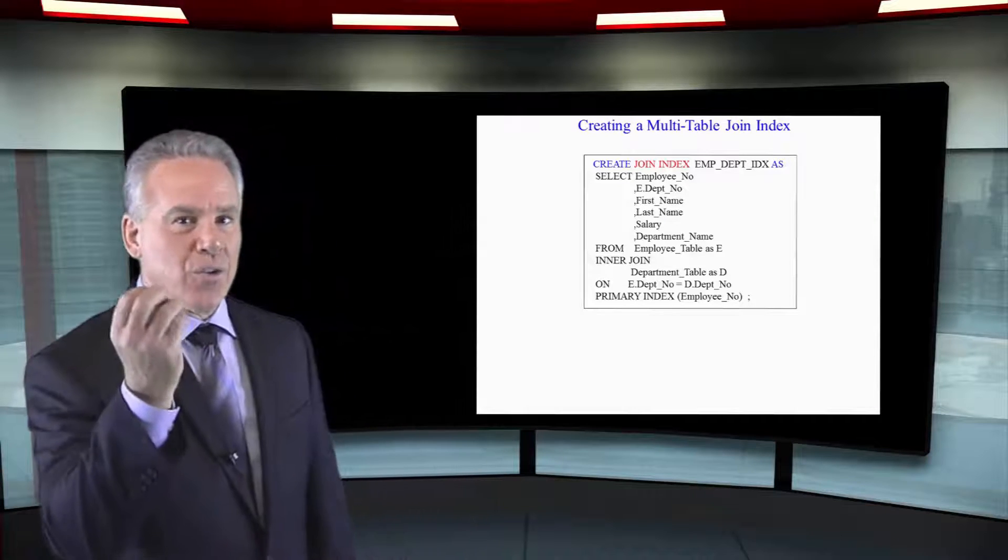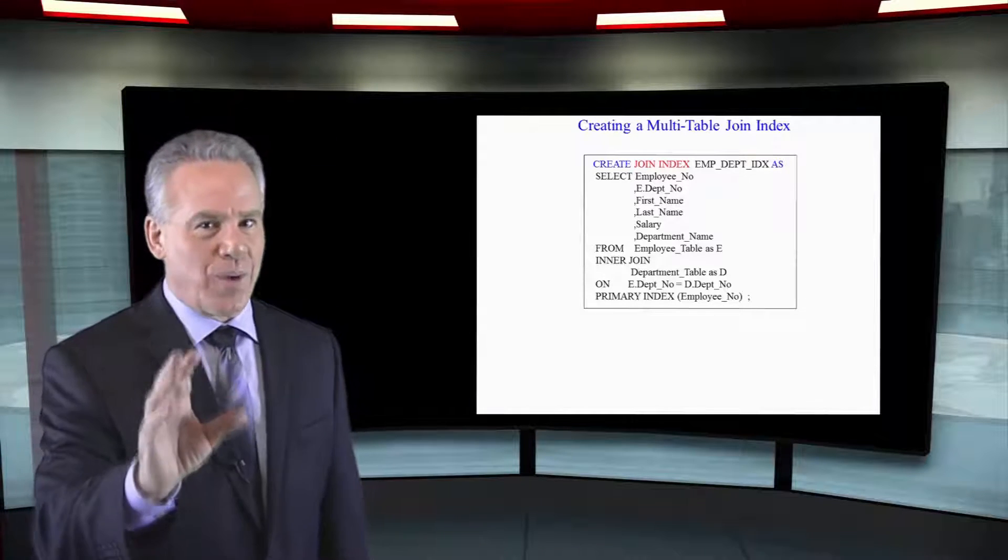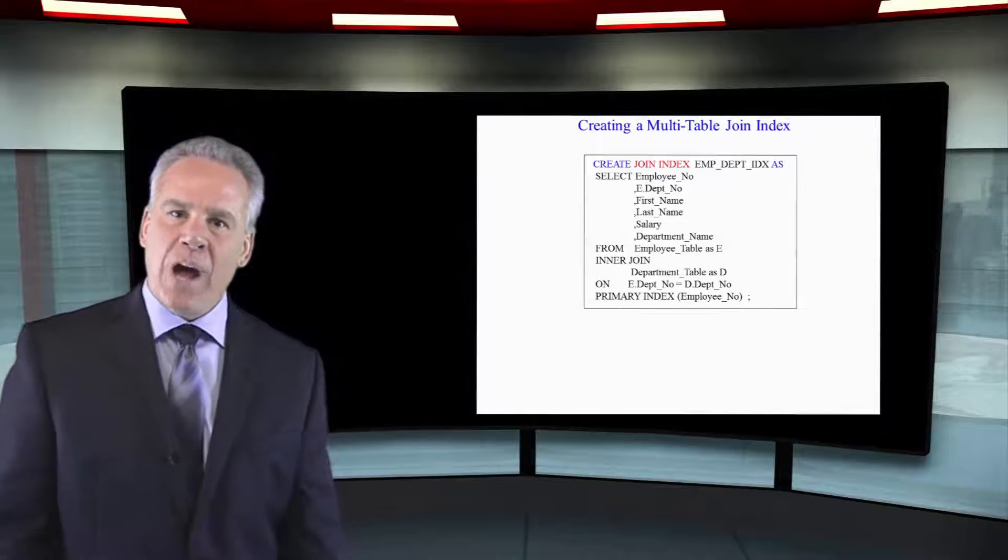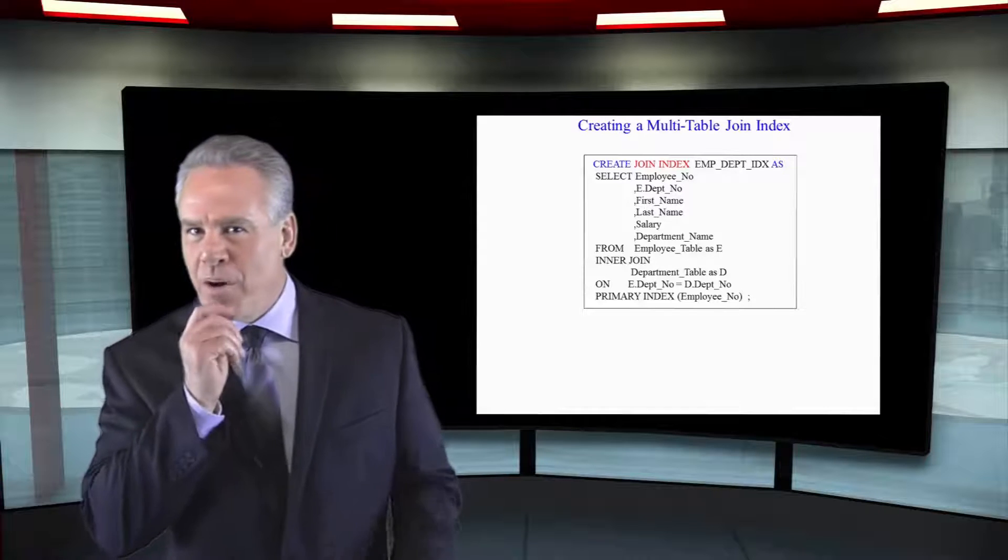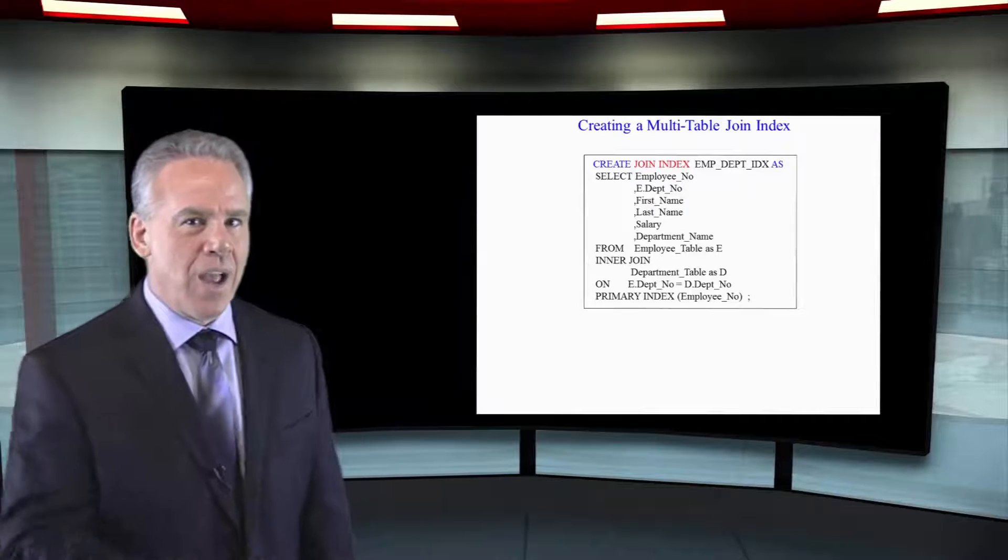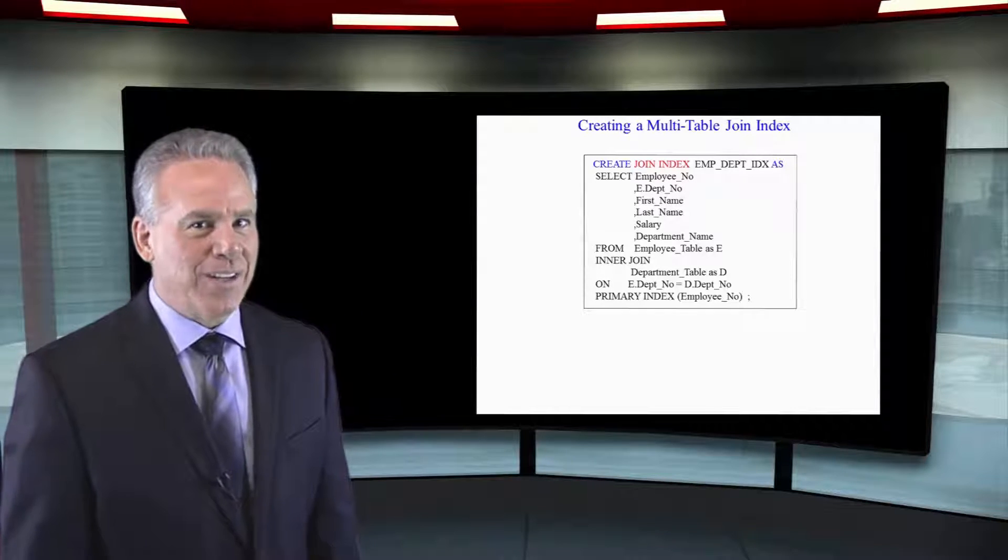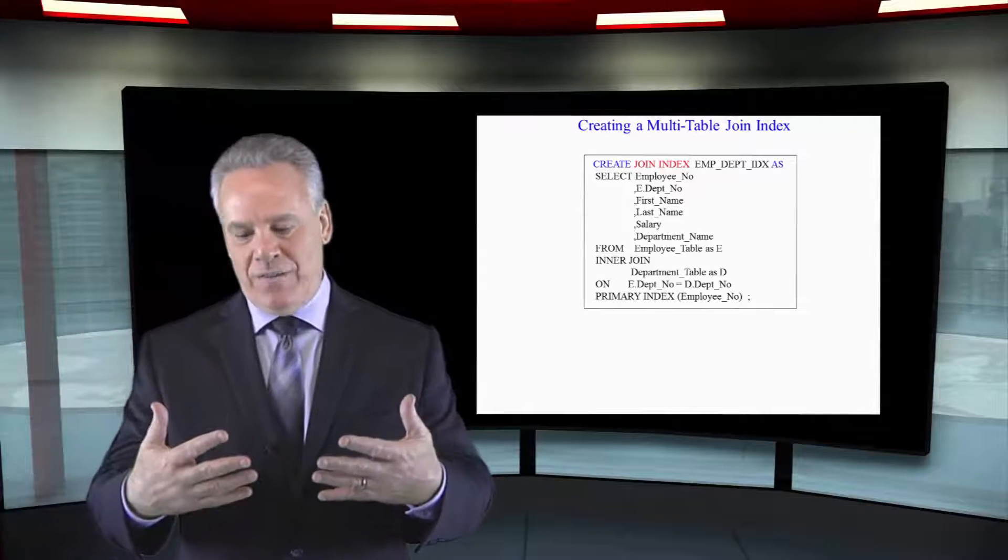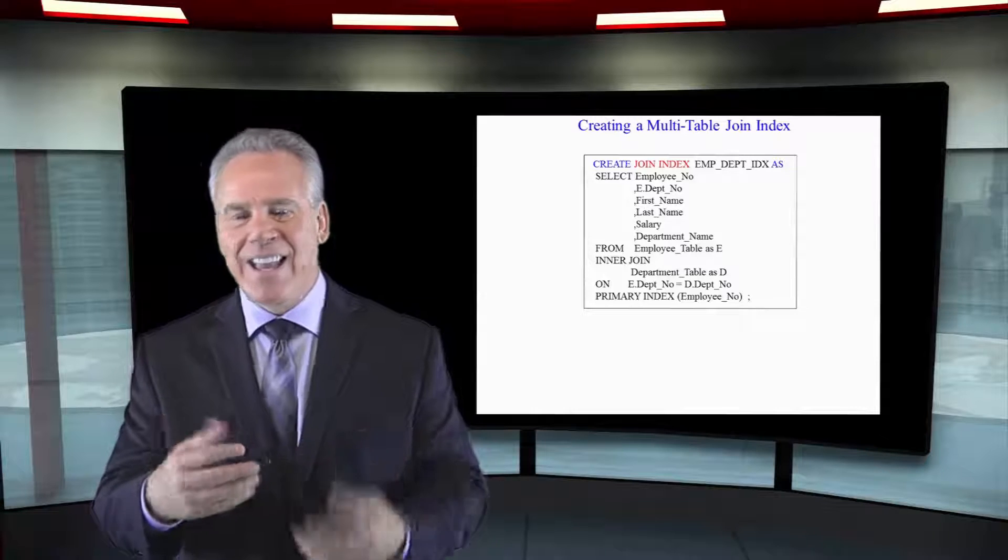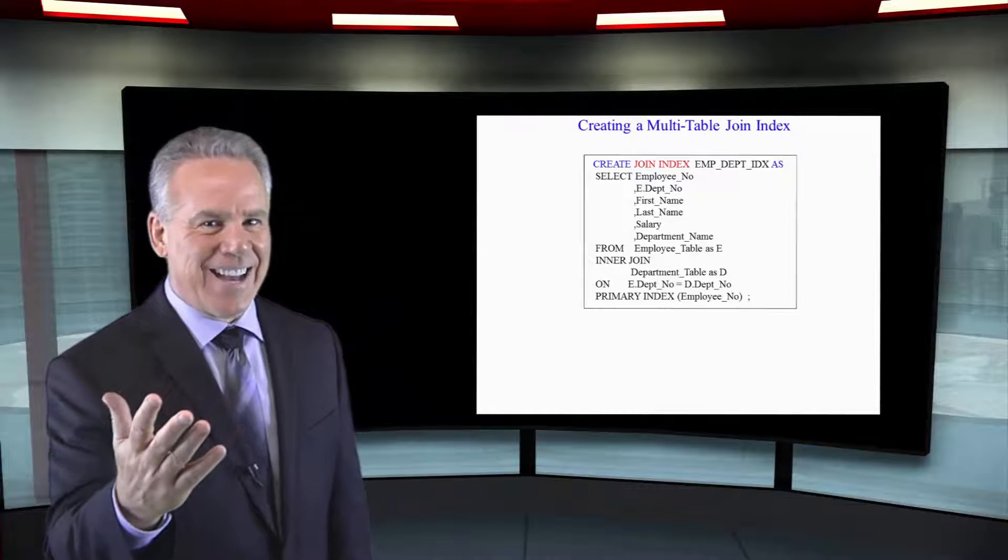You can't query the join index directly, but when you run a query that joins the employee table to the department table, the parsing engine says, I've already got that pre-joined and ready to go, and it decides to bring the information from the join index, and it takes a lot less time.